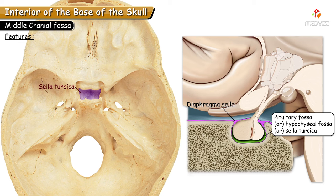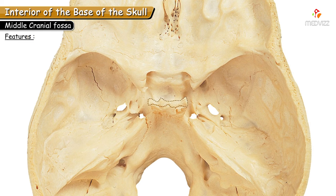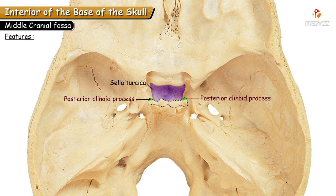The pituitary fossa is otherwise known as the sella turcica, meaning Turkish saddle. Deep to the body of the sphenoid, the sphenoidal air sinuses are present below the floor of the hypophysial fossa. Posteriorly, the diaphragma sellae attaches to the dorsum sellae, meaning the back of the Turkish saddle. The superior angles of the dorsum sellae form the posterior clinoid processes, which deepen the sella turcica and give attachment to the tentorium cerebelli.